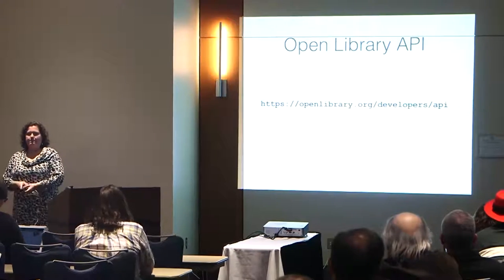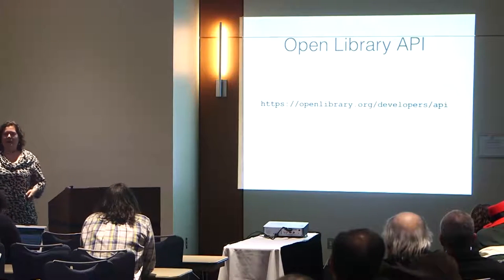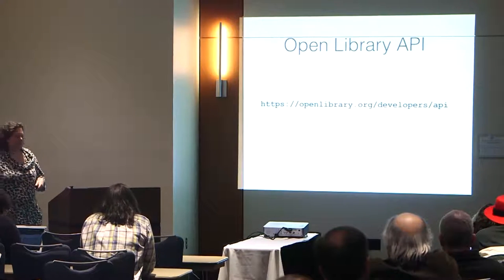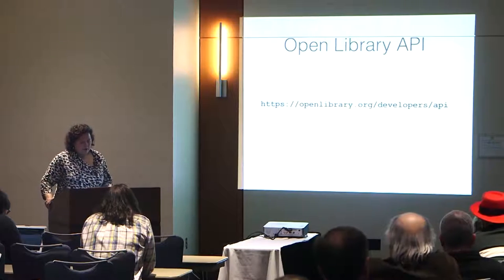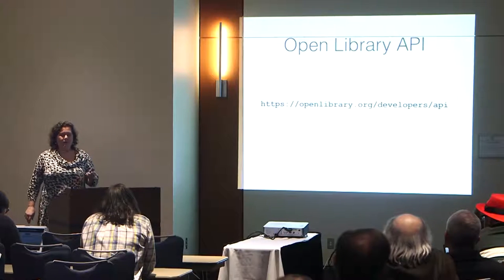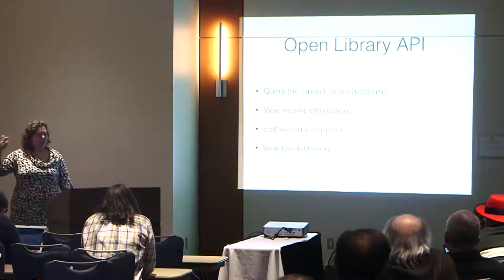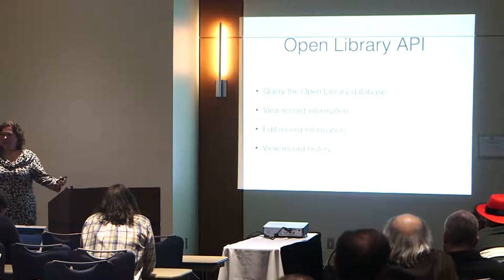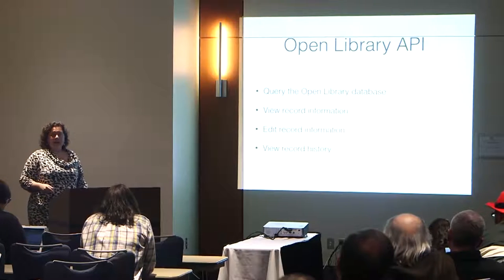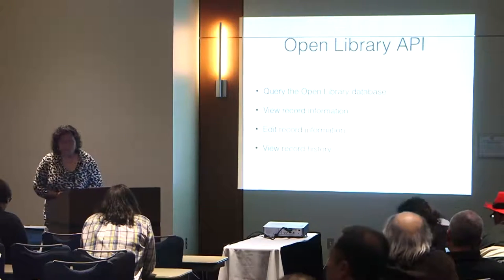Next is the Open Library API. Open Library, as I mentioned, is a webpage for every single book ever published — that's what we're striving for. This is a fully RESTful API. It will return information in both JSON or RDF format depending upon what you request. With it, you can query the Open Library database, view record information, and edit record information. Like Wikipedia, we have a history for edits. This is a really well-documented API.